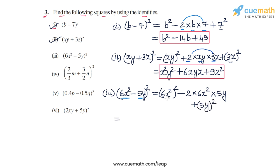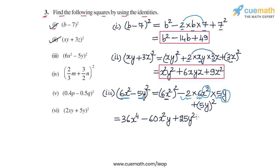Now, 6x squared whole square will be 36, and x squared squared is x to the power 4, so the first term is 36x to the power 4. Then 2 times 6 times 5 is 60, giving minus 60x squared y as the second term. Finally, 5y whole square is 25y squared. So the expression 36x to the power 4 minus 60x squared y plus 25y squared is the answer for part 3.